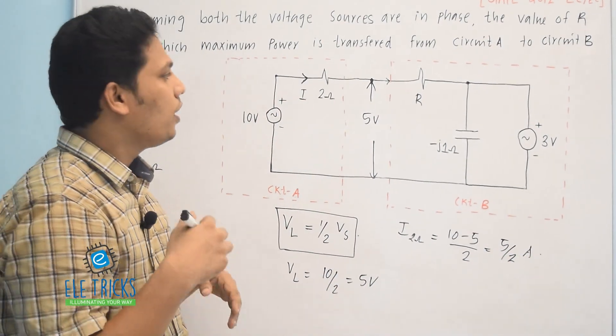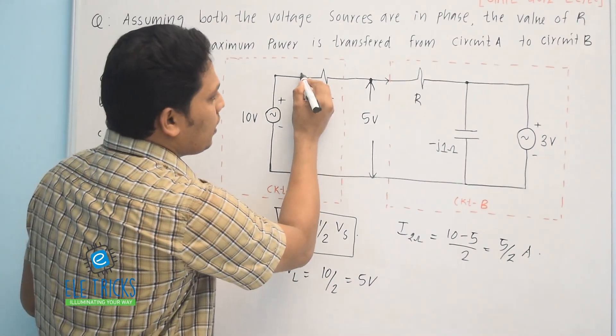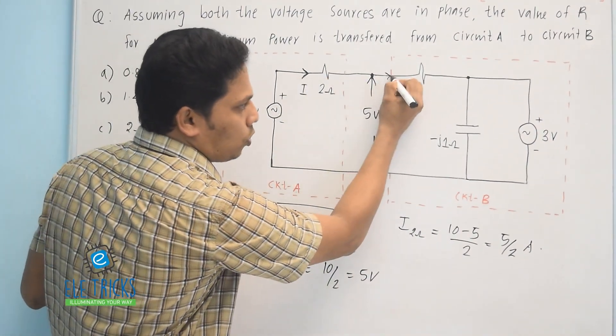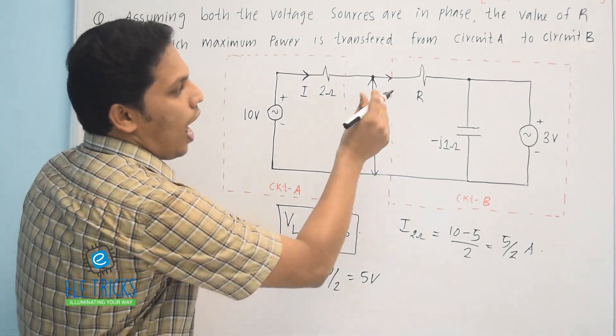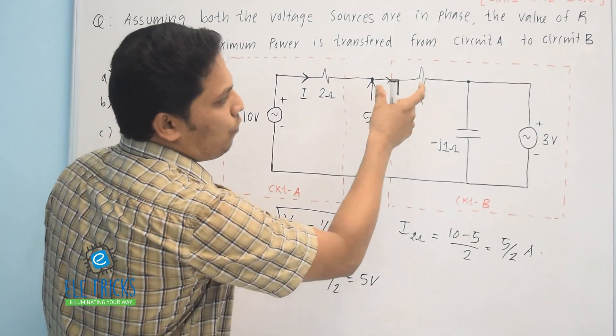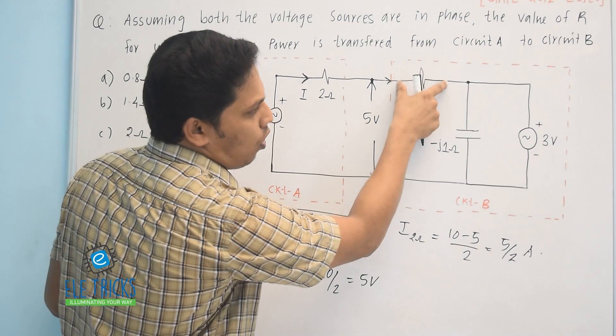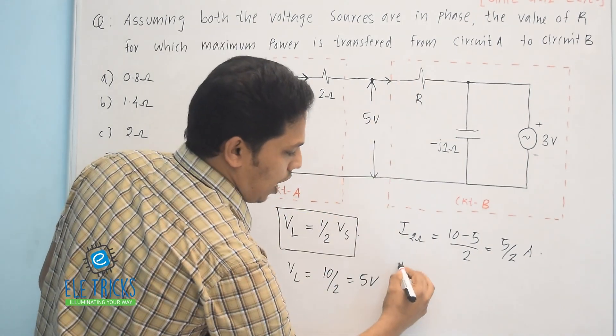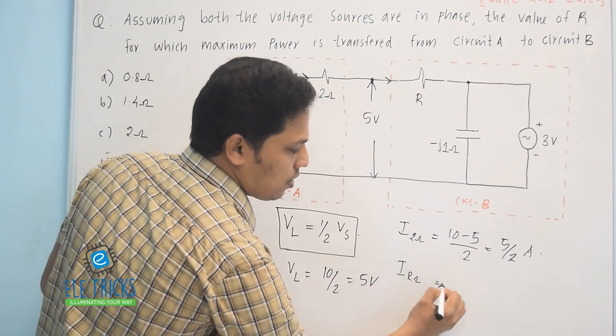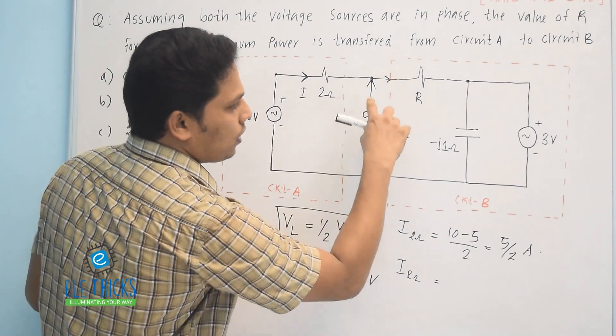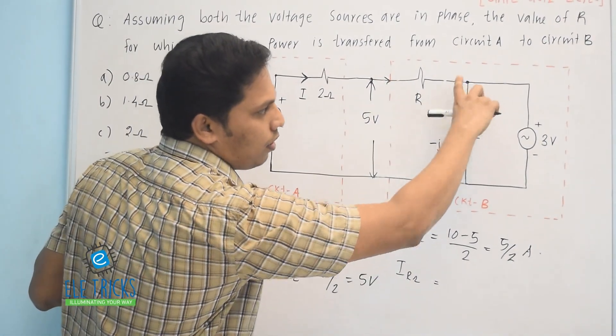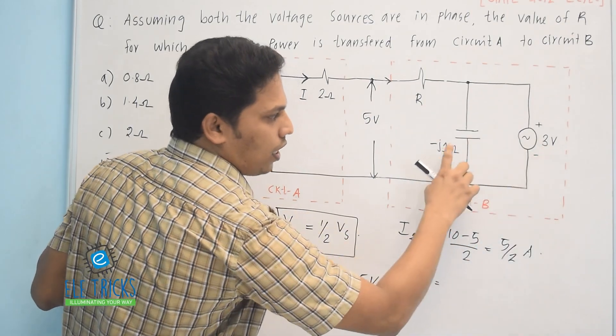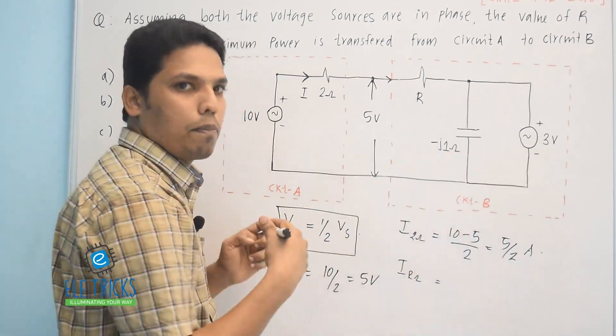You just see, actually the same current will enter to the load side also. So next my objective is to find the current through the R ohm resistance. The current through the R ohm resistance is equal to—here it is 5 volt. What is the voltage across here?